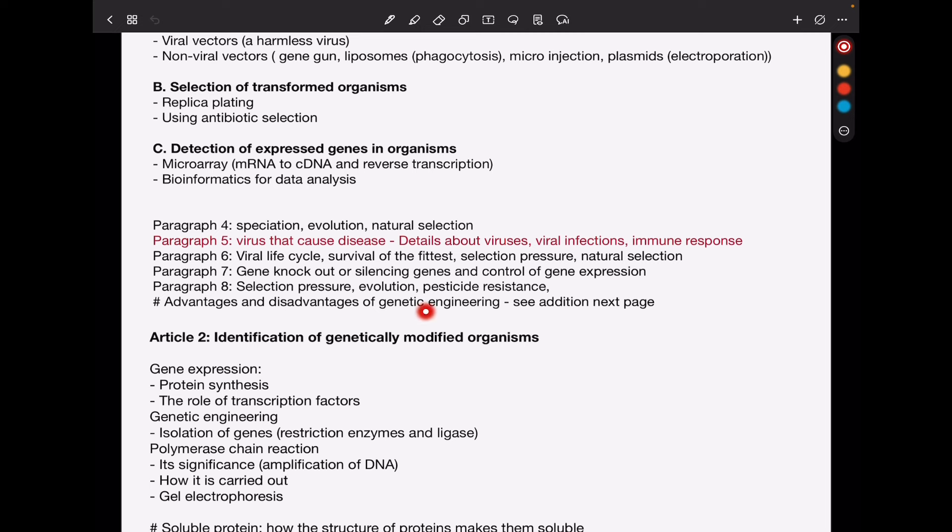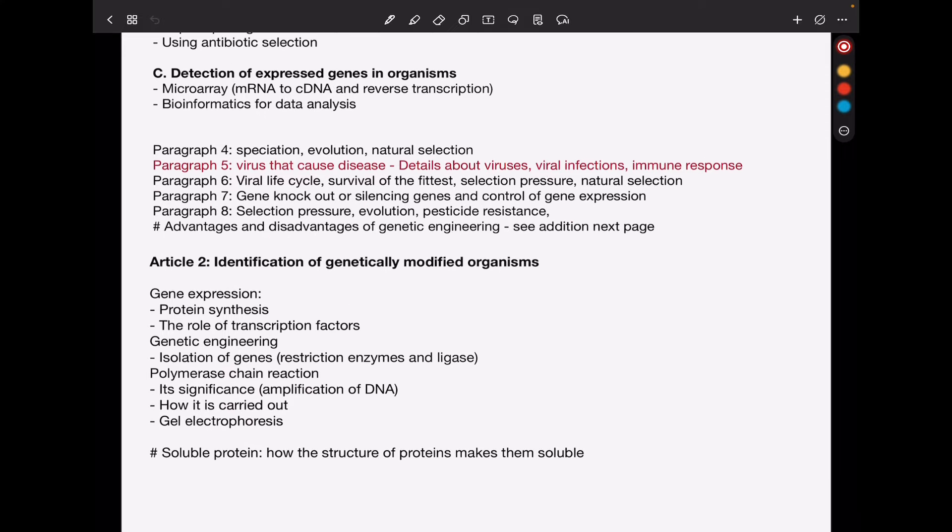And then from Article 2, like you saw my annotation, this is talking about identification of genetically modified organisms. So again, here we expect gene expression, there is protein synthesis because there are molecules that were produced, the role of transcription factors. You do not know if the RNA molecules that were produced are acting as transcription factors, or if those RNA molecules are used to make proteins, and the proteins are going to control how genes are expressed, or how the cell functions.